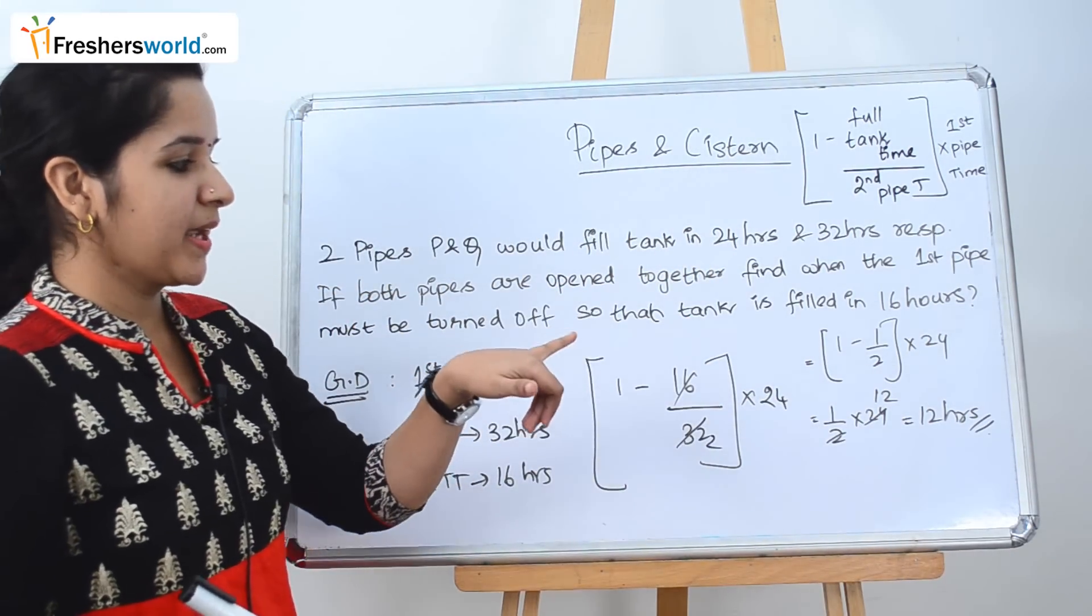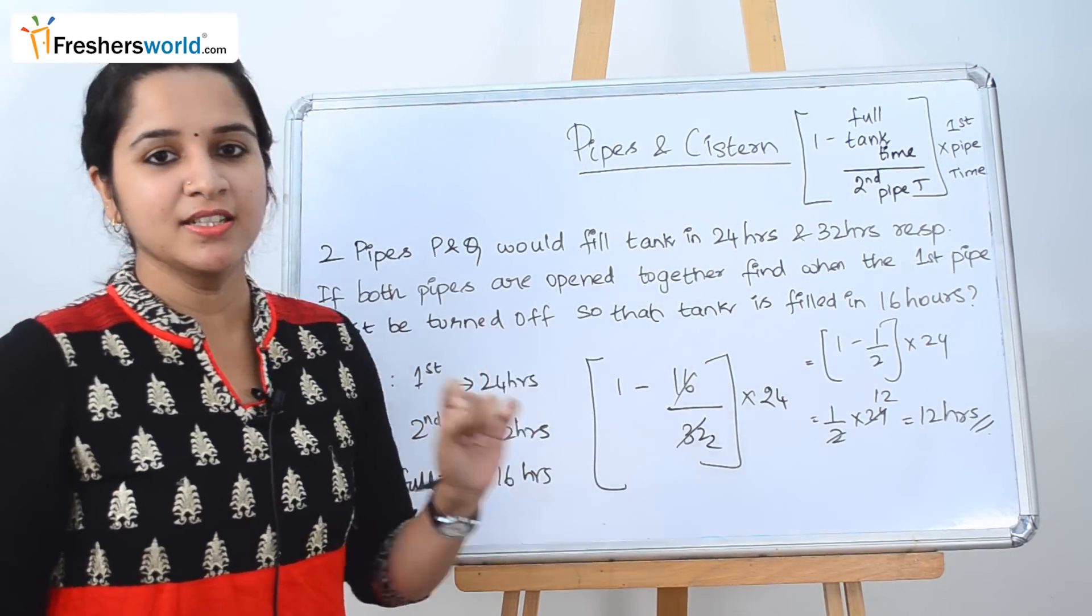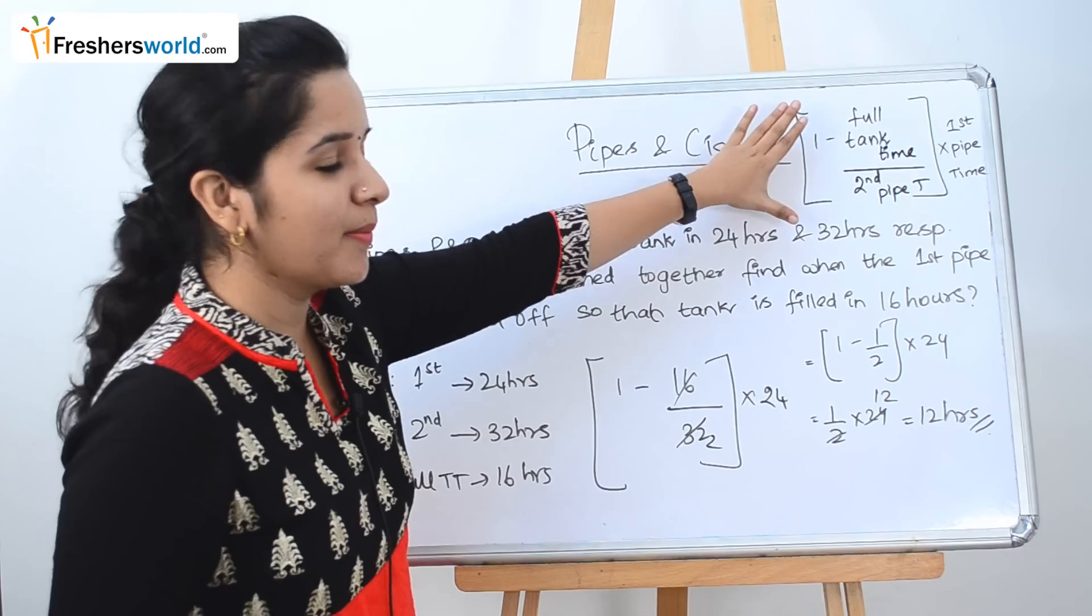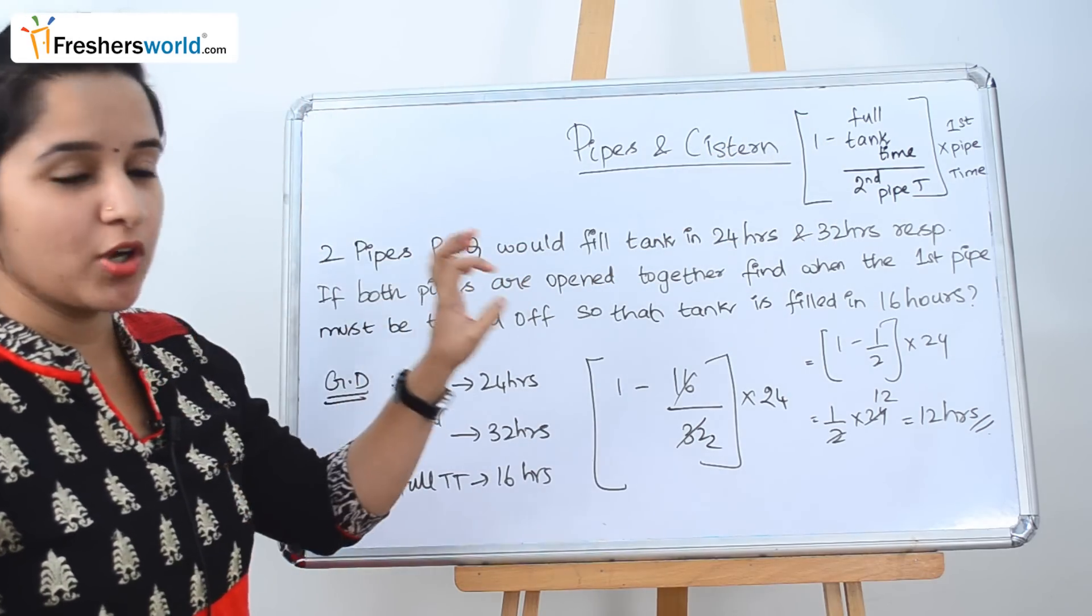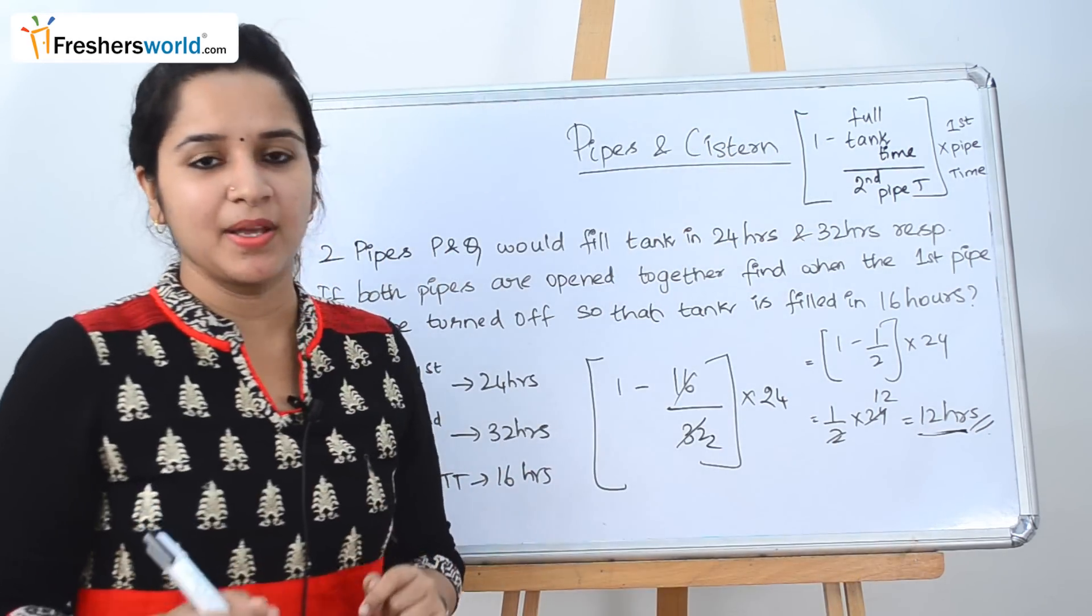So the first pipe must be turned off at 12 hours so that the tank is filled in 16 hours. So there is an elaborate way to do it. Instead of that, we are just using this formula to directly substitute whatever is given in the question to find the time at which the first tap has to be closed.